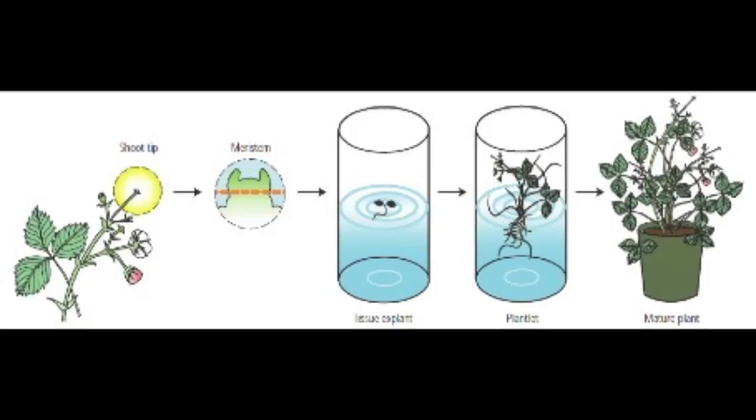Micropropagation is a tissue culture method developed for the production of disease-free, high quality planting material and for rapid production of many uniform plants. There are different types of micropropagation: number one, activation of existing meristems; number two, the induction of buds; number three, the formation of adventitious shoots directly from tissue explants; number four, the induction of direct or indirect somatic embryogenesis; and finally, the differentiation of adventitious buds in the callous culture.